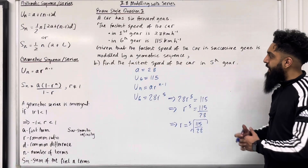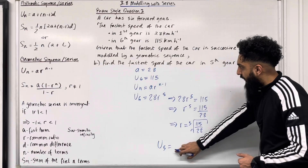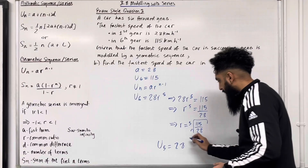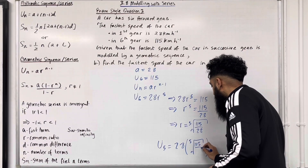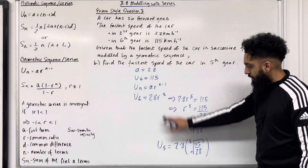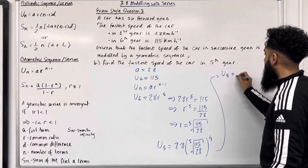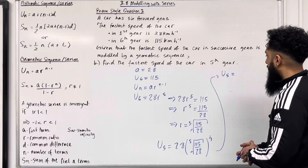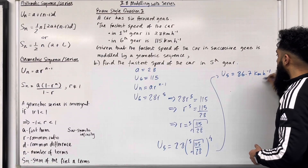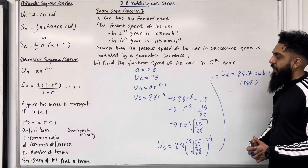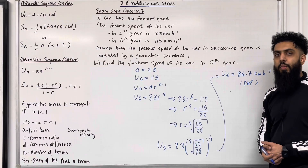Now we find the fastest speed in fifth gear, calculating U₅. U₅ = 28 × (115/28)^(1/5) to the power 4. Putting this into the calculator gives 86.7 km/h to 3 significant figures. This completes part B and exam-style question 3, as well as this teaching video 3.8 Modelling with Series.